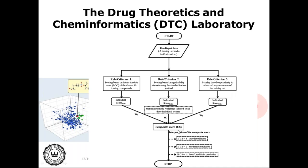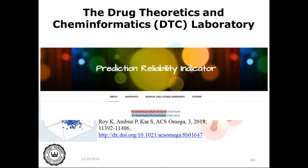We can change the weightage values W1, W2, W3 systematically to find the optimum combination. In many cases, the result was 0.5 for the first criterion, 0 for the second (applicability domain), and 0.5 for the third. The reason for zero weight on the applicability domain criterion is that it is already somewhat included in the first criterion, since we are examining performance for the close 10 training compounds. From these criteria we compute a composite score: a score of 3 gives good prediction, 2 gives moderate prediction, and 1 gives poor or unreliable prediction. This has been published in RSC Omega in 2018.